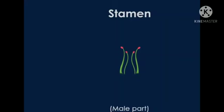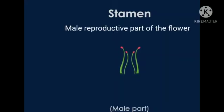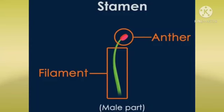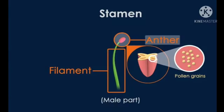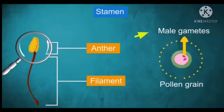Stamen. Stamen is the male reproductive part of the flower. Each stamen consists of a filament and anther. The anther carries several pollen grains. Pollen grains produce the male gametes, or male reproductive cells.